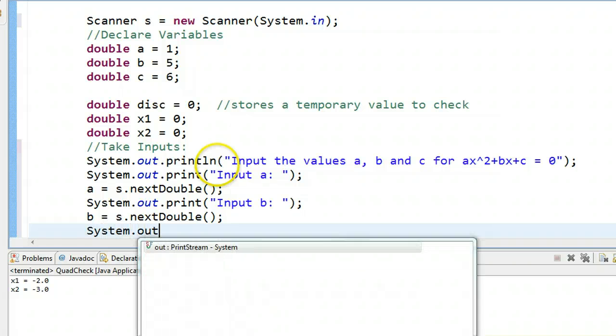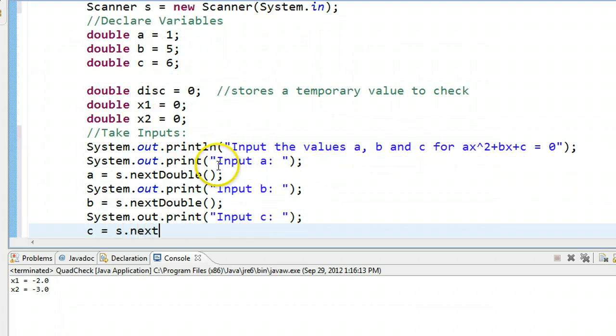b is equal to s.next double, system.out.println input c, c is equal to s.next double.